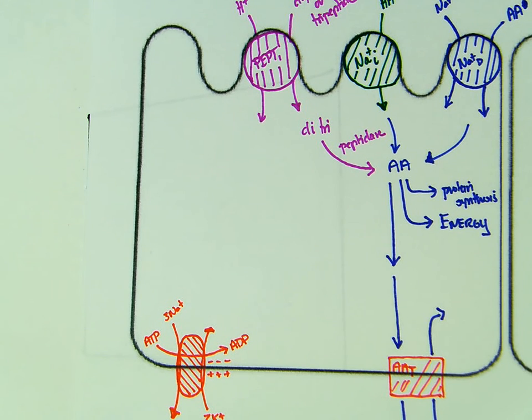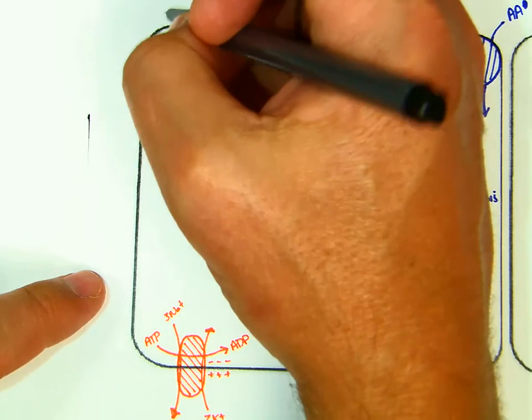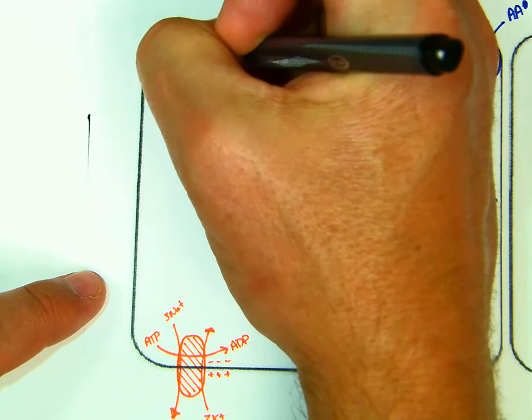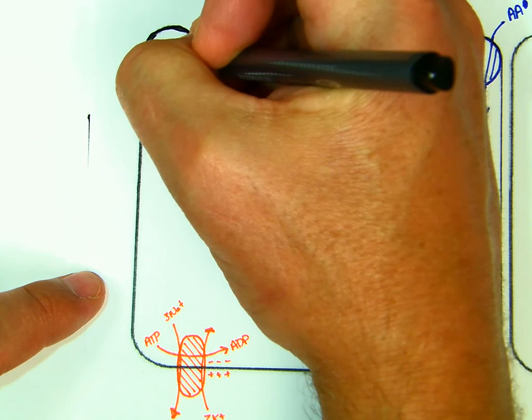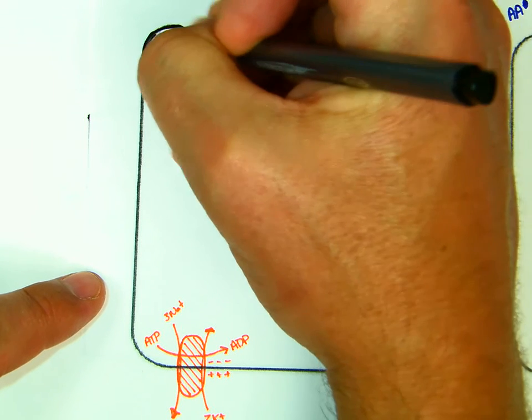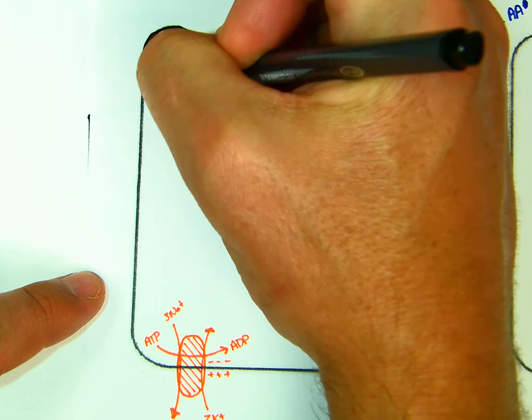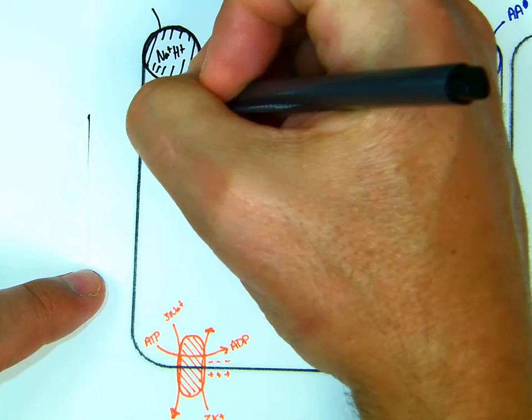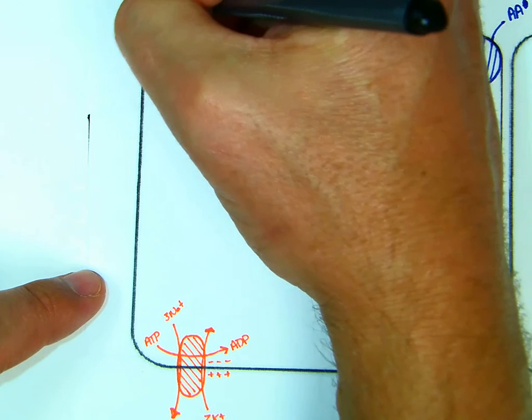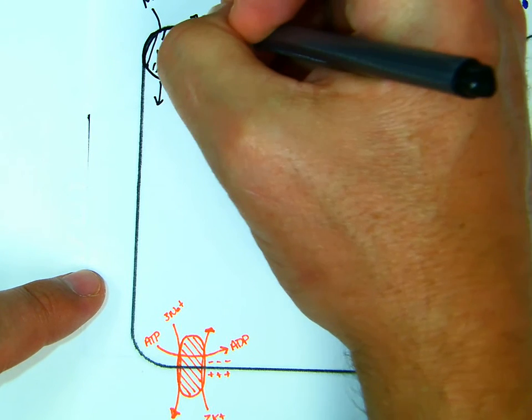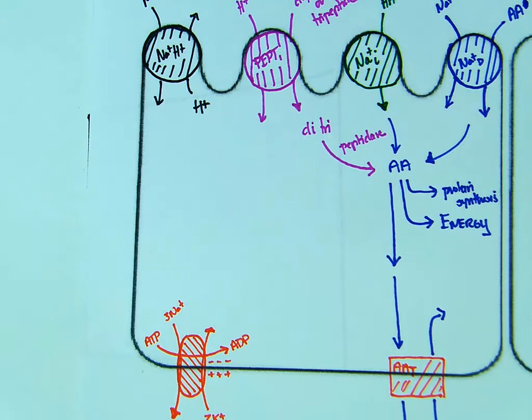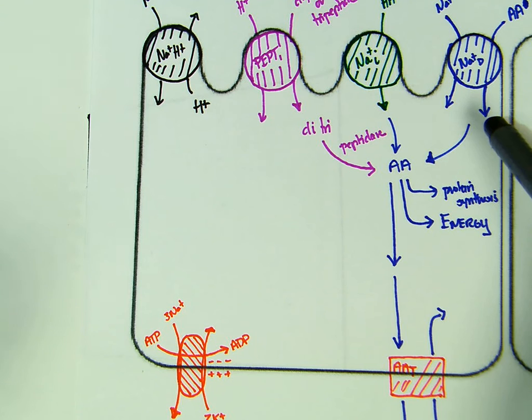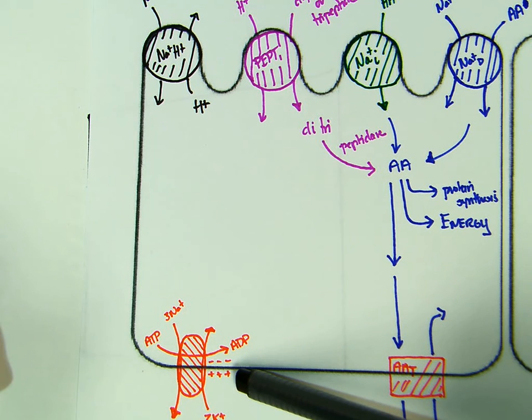And so we have a sodium-proton co-transporter. And the last thing we have to do is over here, we have to handle this proton. It's going to transport sodium into the cell and a proton out of the cell. Remember, sodium-dependent is going to diminish the electrochemical gradient created by the sodium-potassium pump down here.